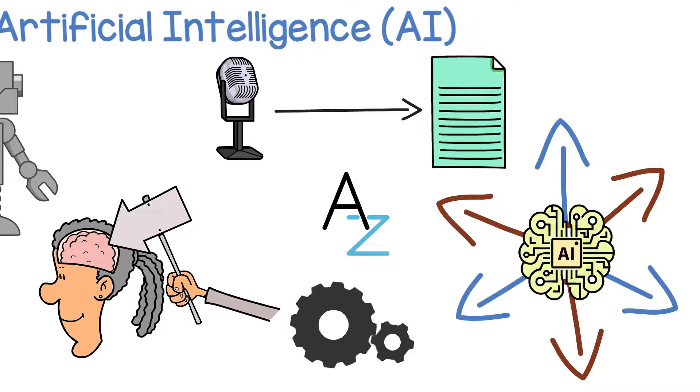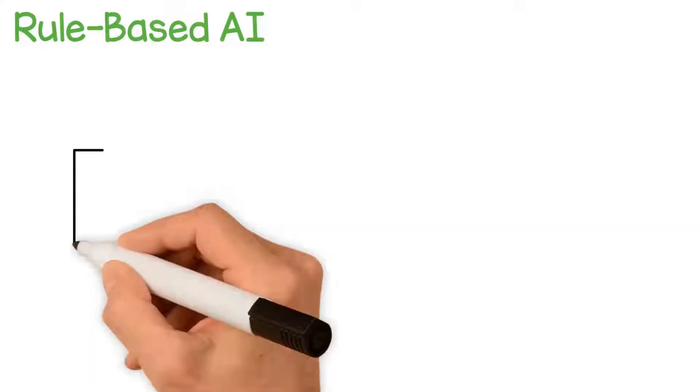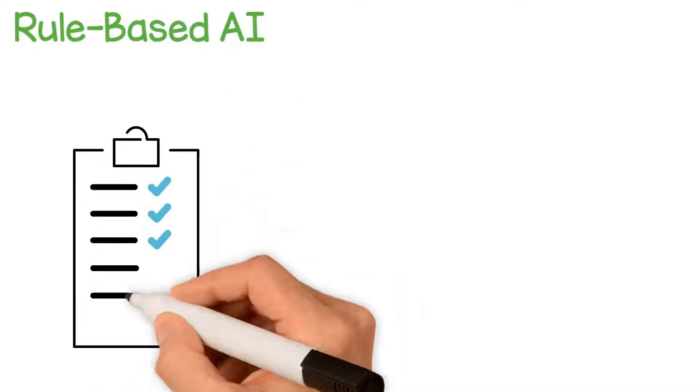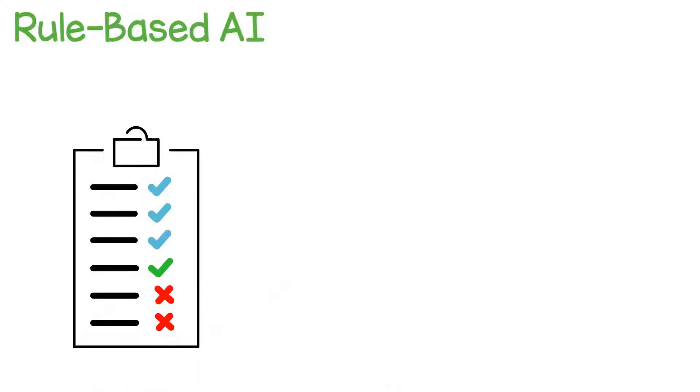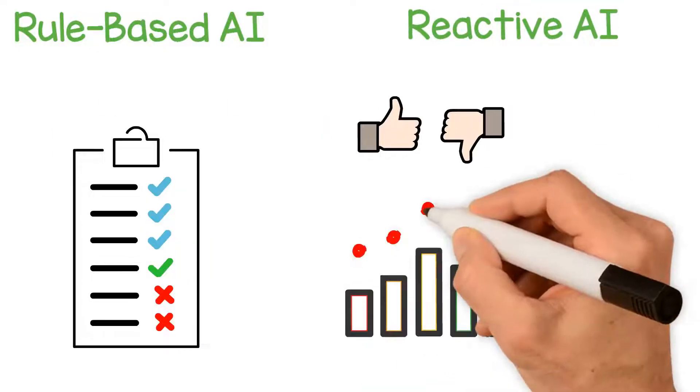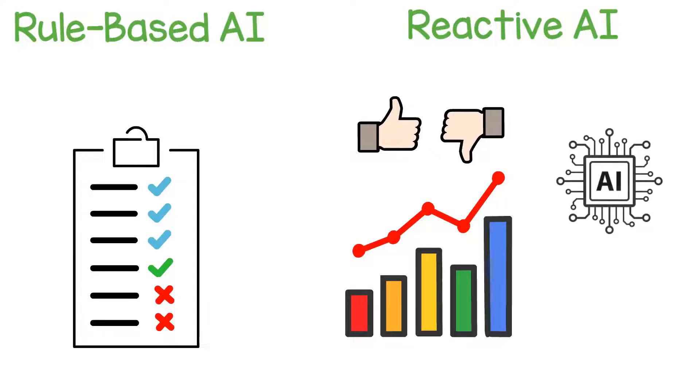There are several types of AI, each with their own unique characteristics and capabilities. Rule-based AI, for example, uses a set of predefined rules to make decisions. Reactive AI, on the other hand, only reacts to the current situation and doesn't remember past events.